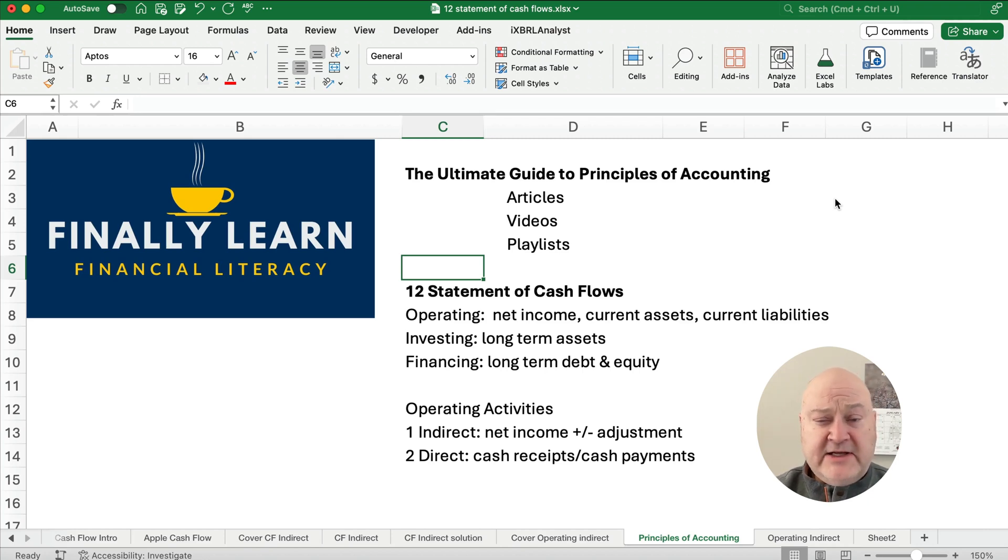Now under Operating Activities, there's two different ways to prepare this. We can use the indirect method, which is our video today, and then the direct method. The indirect method starts with net income and plus or minus adjustments, and the direct method just figures out cash receipts and cash payments.